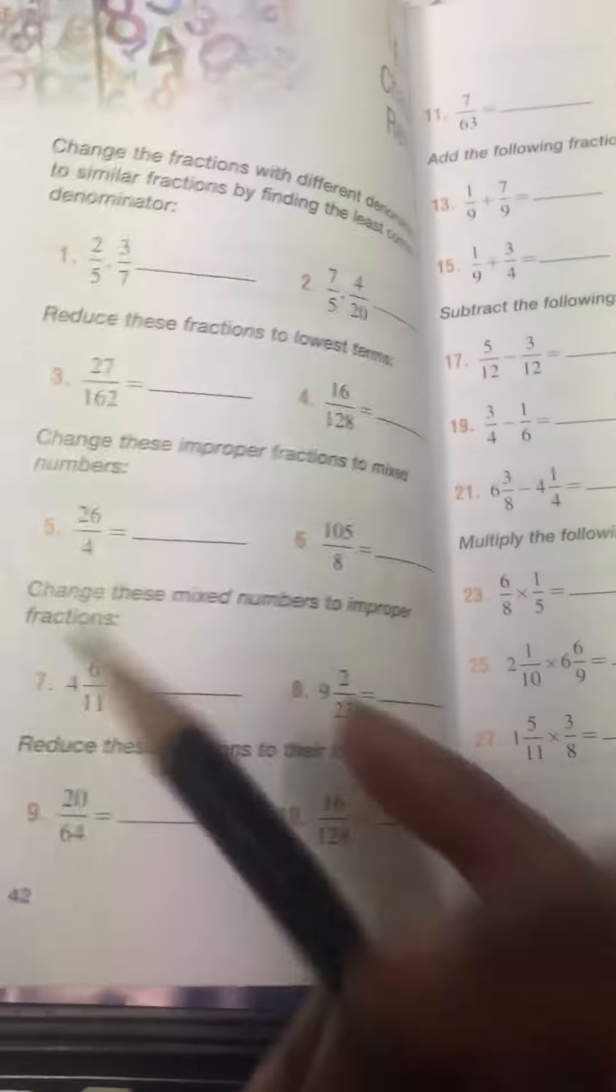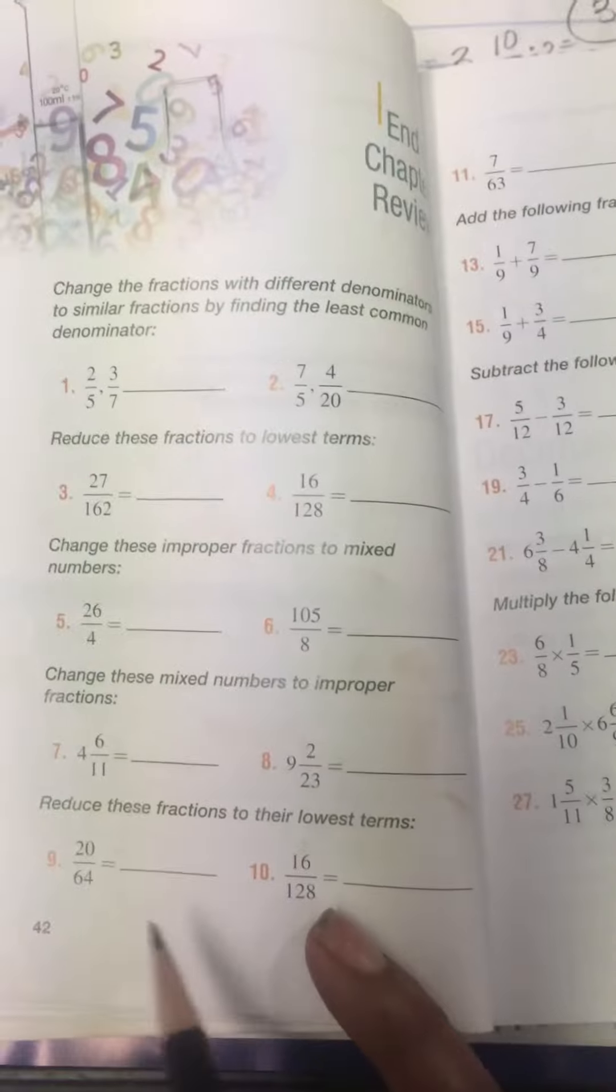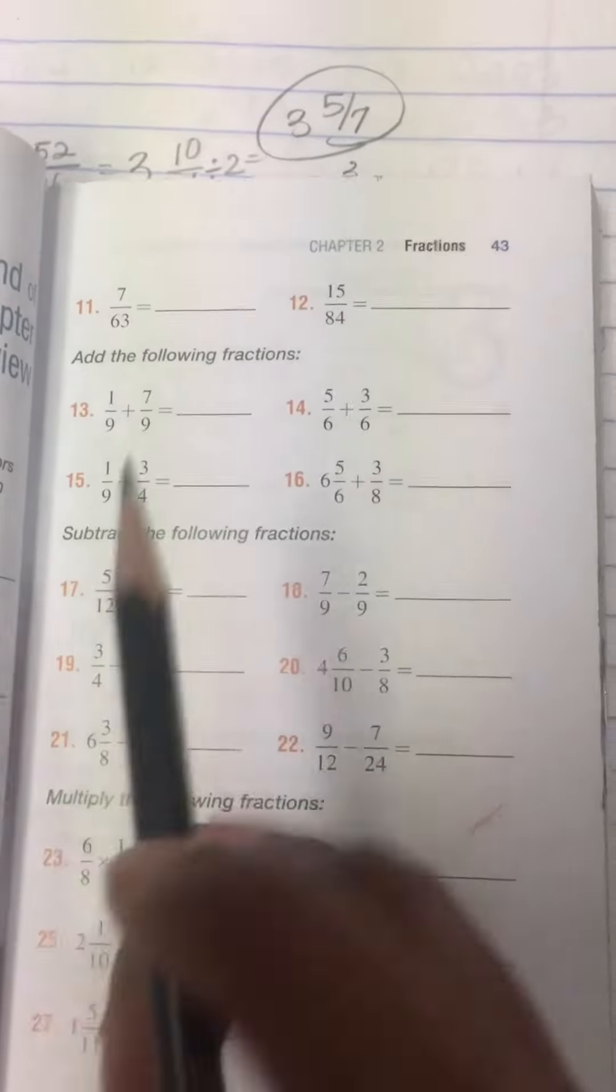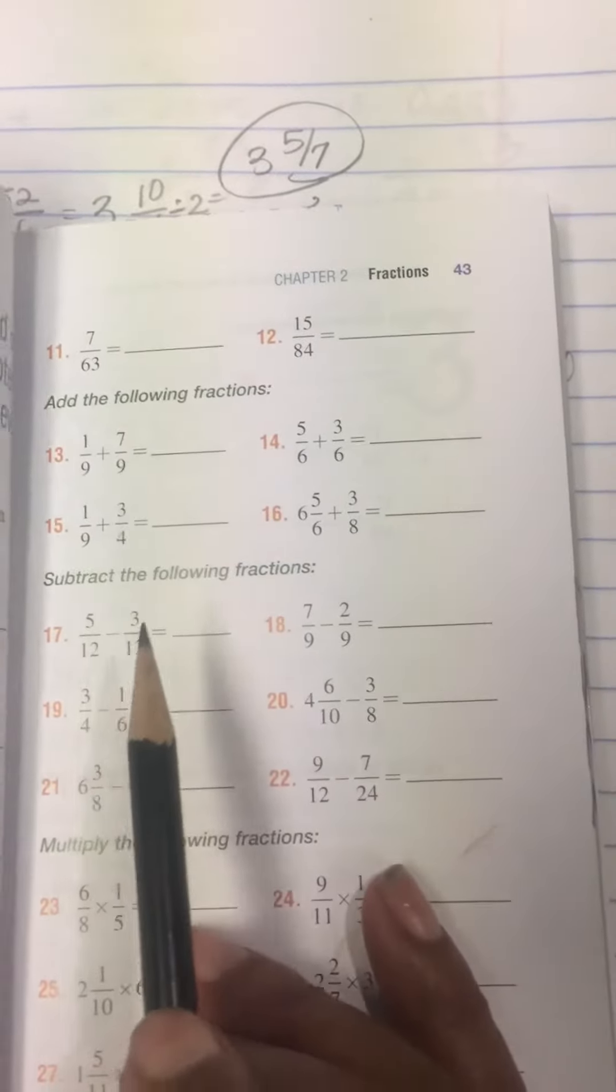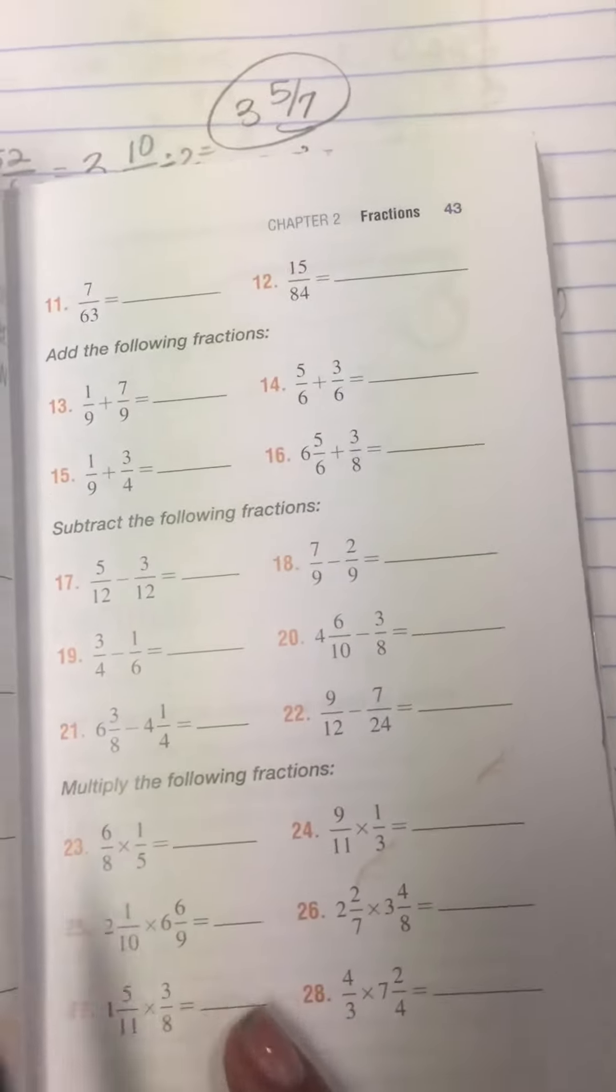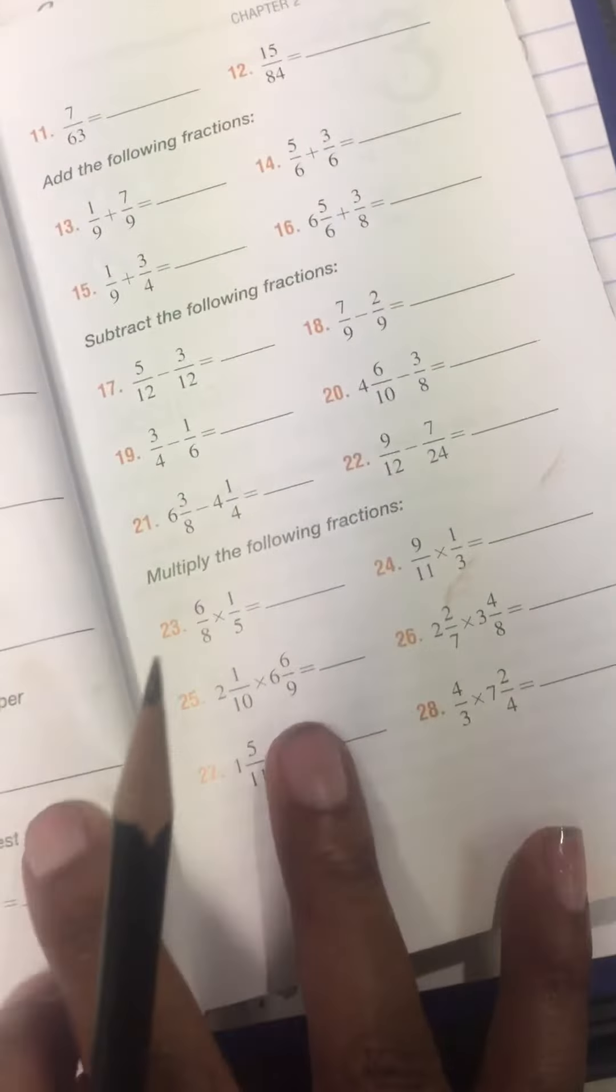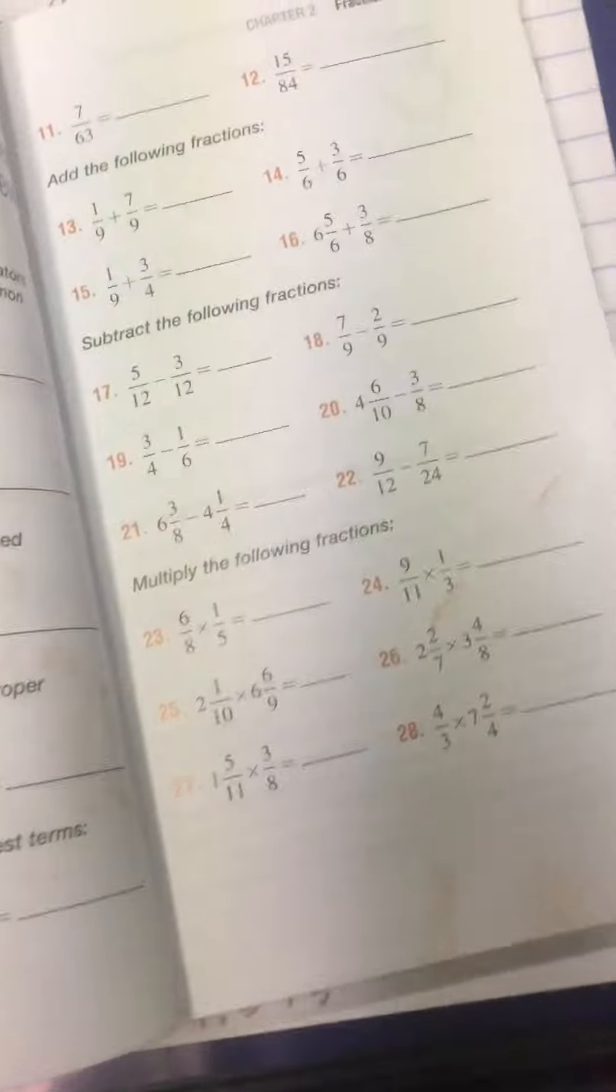Changing mixed numbers to improper fractions, we know you multiply and add. Reducing your fractions, we've been simplifying our fractions already in class. For the next set, I want to make sure you can add as well as subtract fractions. The multiplying and dividing are similar to what we've been doing already.